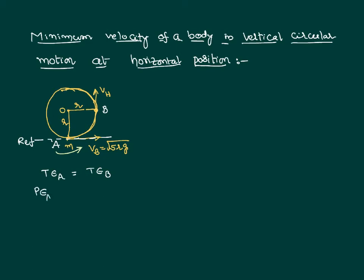Total energy means there is potential energy and kinetic energy at point A, equal to the potential energy and kinetic energy at point B. Since A is taken as the reference point, the height at A is zero, so potential energy at A equals zero. Kinetic energy at A is (1/2)mv_A². At point B, which is at a height equal to the radius r, the potential energy is mgr, and kinetic energy is (1/2)mv_B².